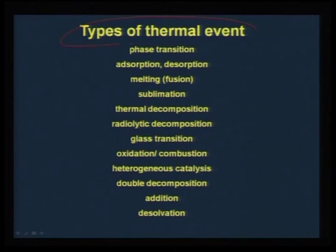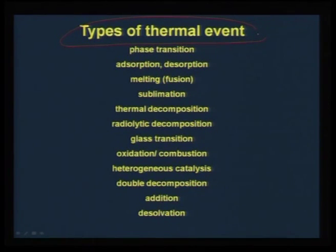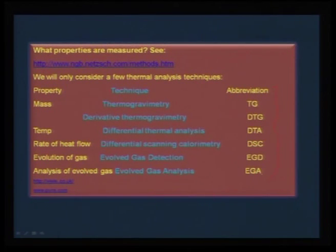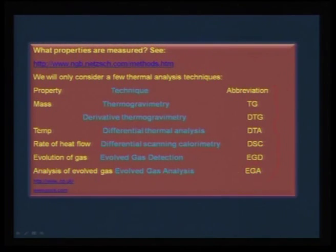We will also look at thermal analysis — a technique that is usually not taken seriously, but I will dwell at greater length to show that such a simple technique can give very rich information about the physics and chemistry of materials. Any compound that is heated goes through a variety of changes including sublimation, melting, glass transition, oxidation, and double decomposition. The techniques listed under thermal analysis include TG or DTG, differential thermal analysis (DTA), differential scanning calorimetry (DSC), and evolved gas analysis.